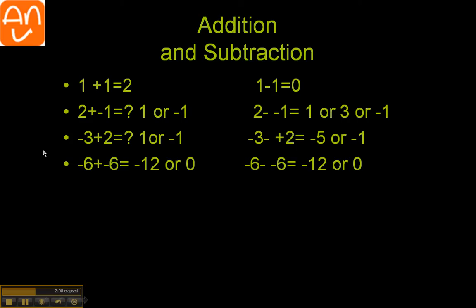Similarly, the next one, that is minus three plus two. We are going to add different sign numbers. That is negative three and positive two. So what you are going to do? You have to subtract. Yes. So three minus two is equal to one.